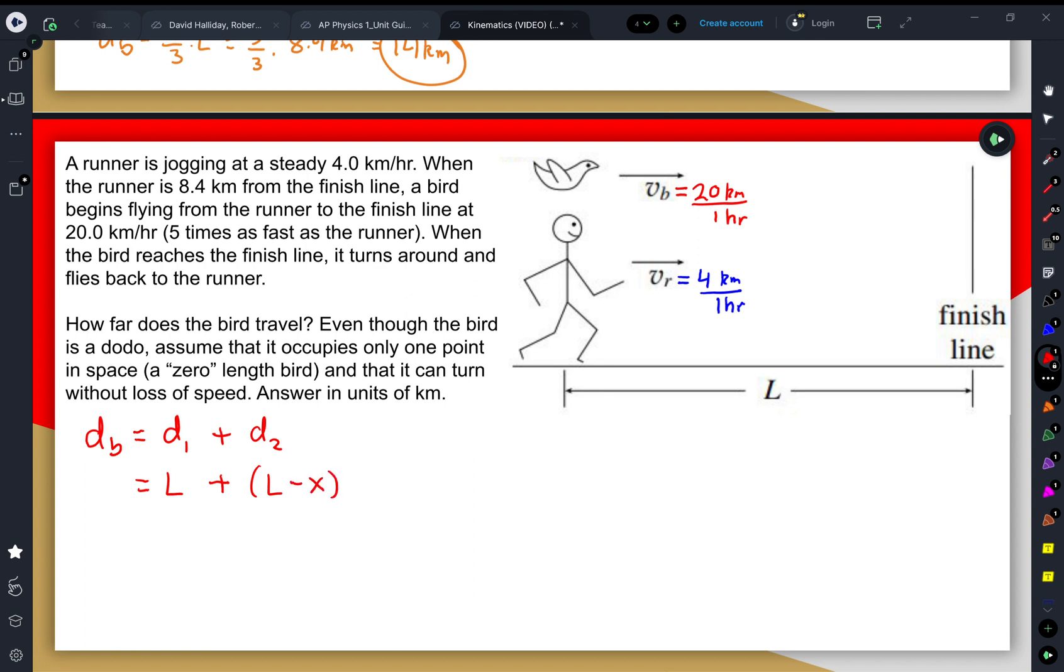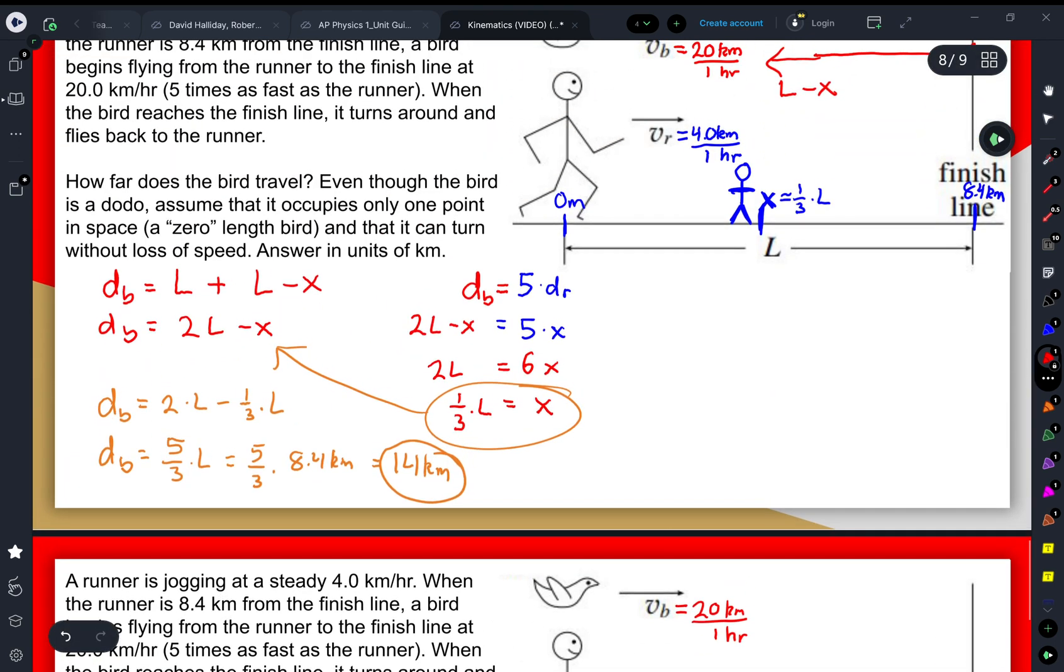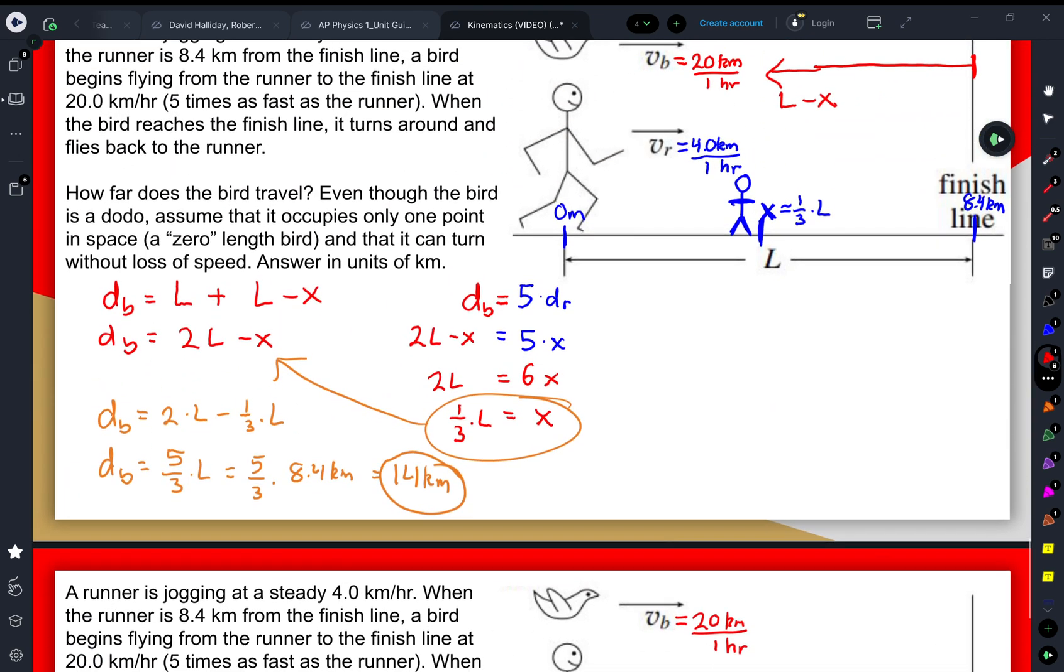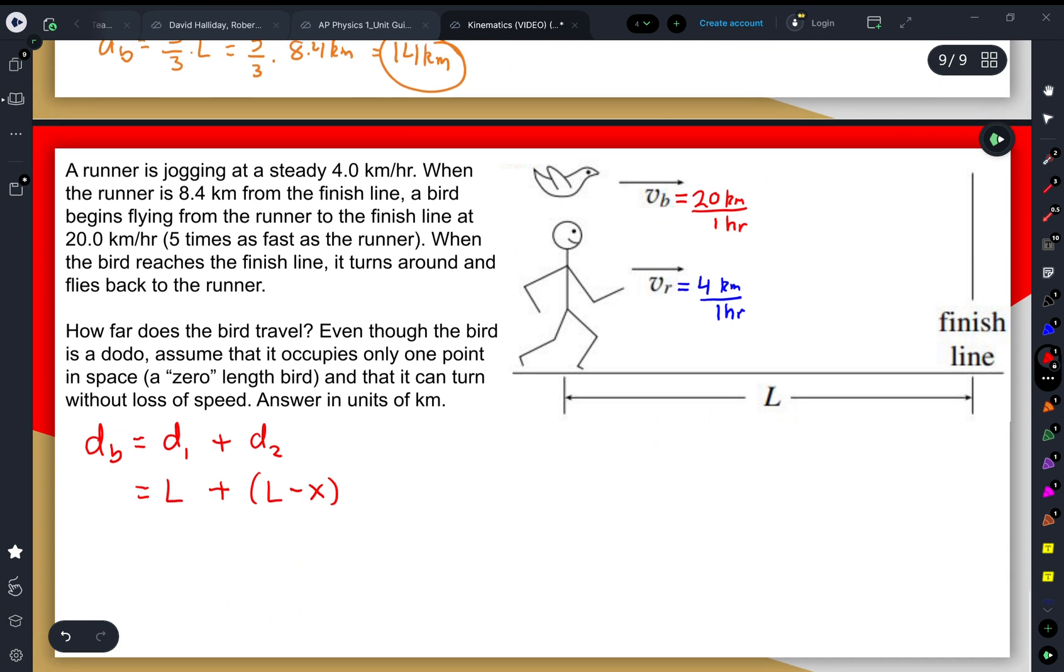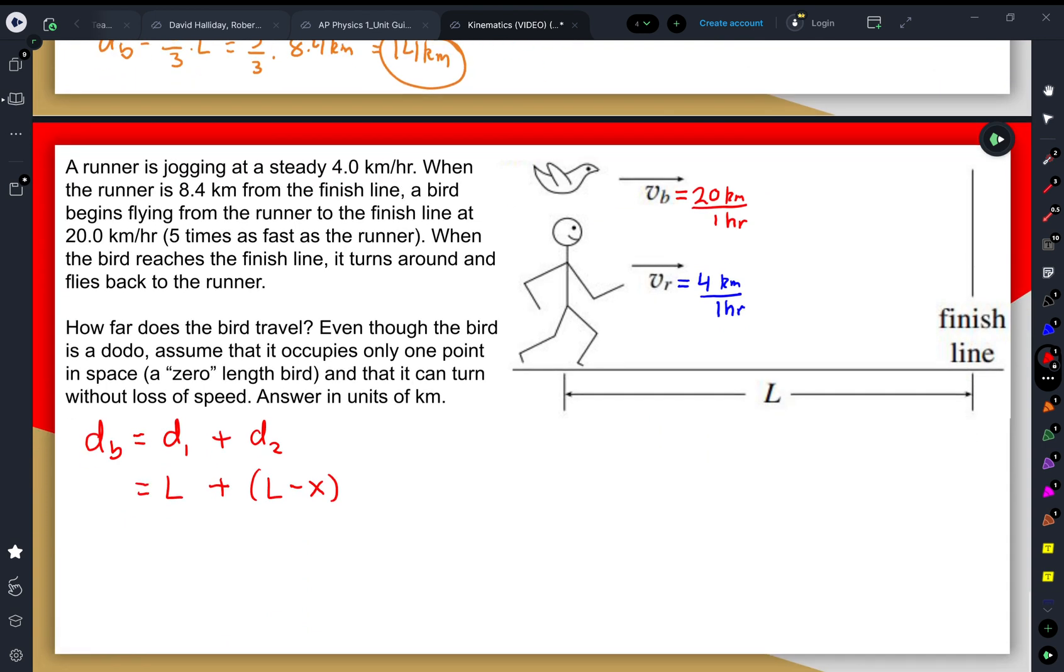But instead of solving for it by writing a bunch of equations like we saw up here, just trying to focus on lengths and logicing our way through it, we can treat this as though it were a graph. Because once the bird gets down to this position, its motion changes. We no longer have that positive 20 kilometer per hour velocity starting with that initial position of zero.